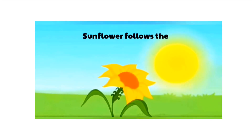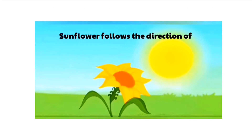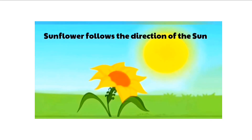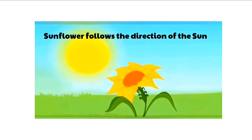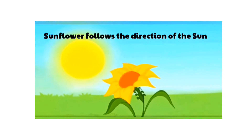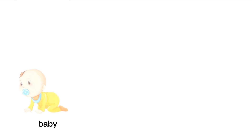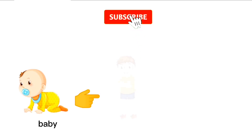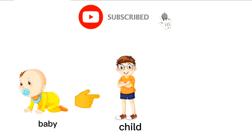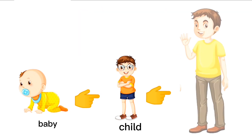Plants also show some movement, like a sunflower that follows the direction of the sun. Living things grow — a baby grows to a child, which then grows to a man.